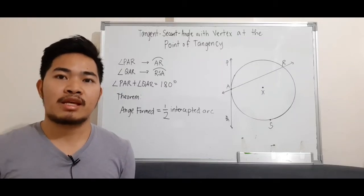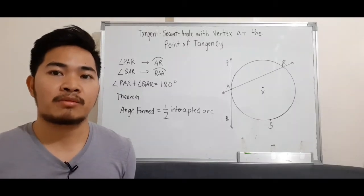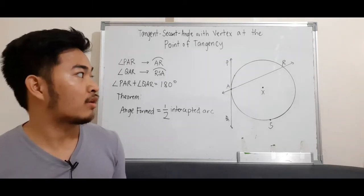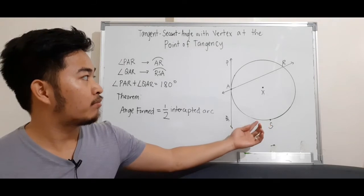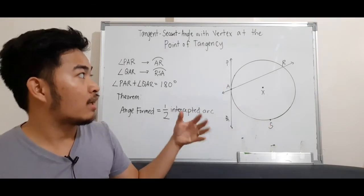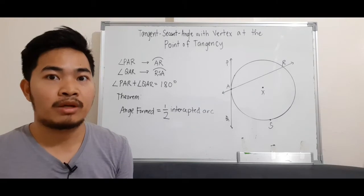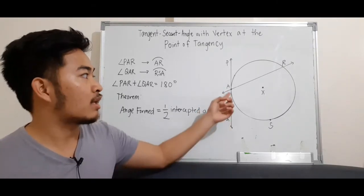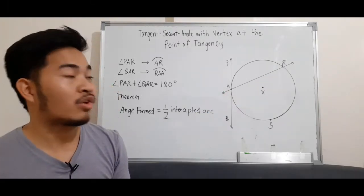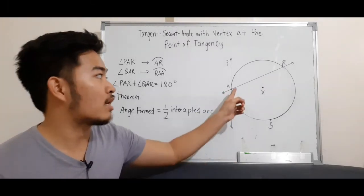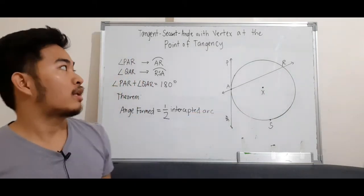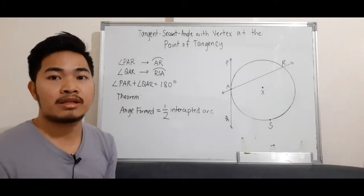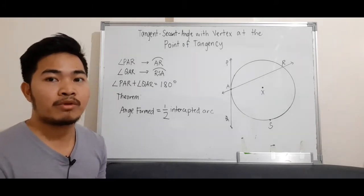Before we discuss the tangent-secant angle theorem with vertex at the point of tangency, let us first recall tangent and secant. In the given figure, we have tangent PQ because it intersects the circle at exactly one point, and we have point A as the point of tangency. We also have the secant, which is line AR, because it contains the chord which is line segment AR. And we also have the intercepted arcs. Remember that the intercepted arc is the arc opposite to the angle.